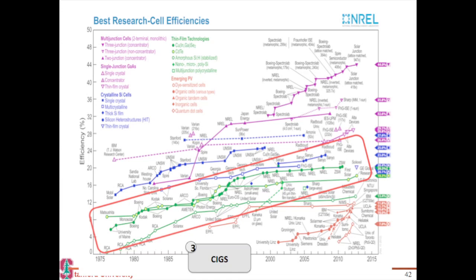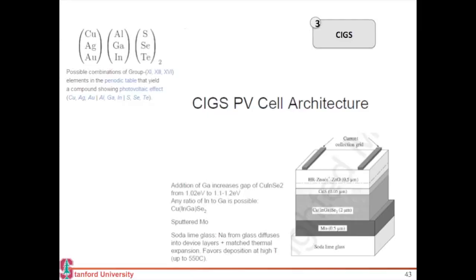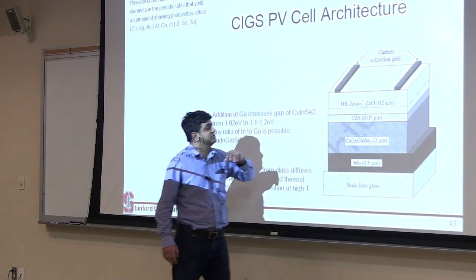The next technology after CdTe in the efficiency chart is CIGS-based solar cells. CIGS stands for copper, indium, gallium, and selenium. You can have any combination of group 11, 13, and 16 materials — copper, then indium and gallium, and then either sulfur or selenium — and all of them give you a direct band gap material. The good thing about CIGS is that you can tune the indium-to-gallium ratio. It's typically copper-indium-gallium with two atoms of selenium, and you can use that to tune your band gap from 1.0 to around 1.2 eV.